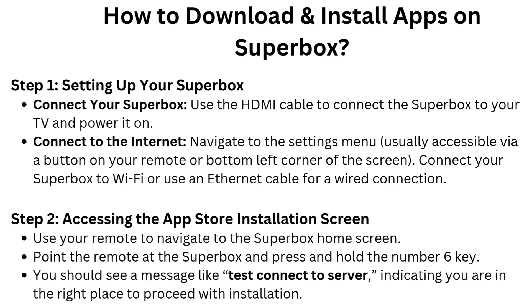Connect to the Internet. Navigate to the Settings menu, usually accessible via a button on your remote or the bottom left corner of the screen. Connect your Superbox to Wi-Fi or use an Ethernet cable for a wired connection.